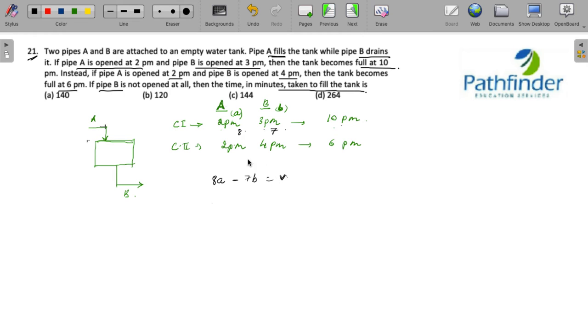Similarly, from 2 p.m. to 6 p.m. in case 2, pipe A has been operational for 4 hours and pipe B for 2 hours, so 4A minus 2B is also equal to V.